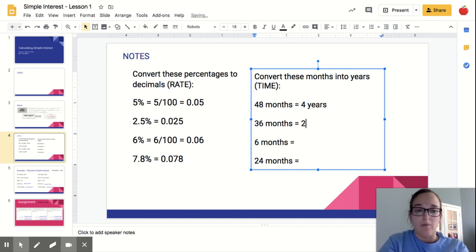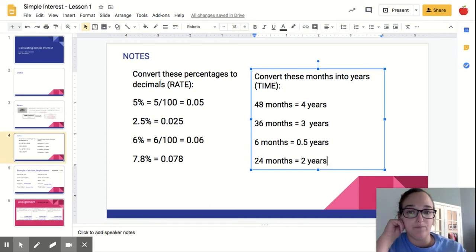But me and Miss Mormon just put this in here to kind of help you remember. Six months would be half of a year. So I would write that 0.5 years or year. 24 months would be two years. So you have to convert decimal or the percent into a decimal. And if they give you months, you've got to convert it to years.